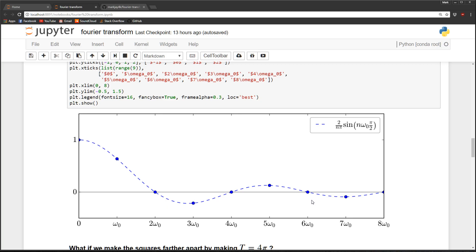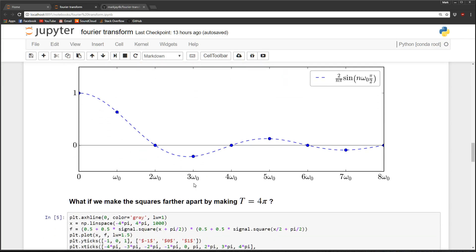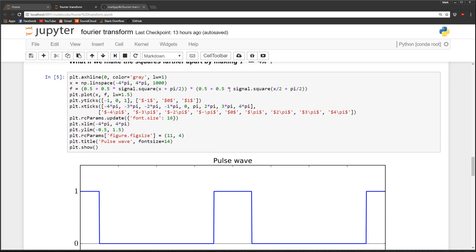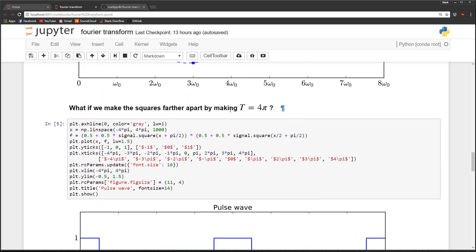So kind of cool. So now what happens if I were to take our square wave and just push those square pulses farther and farther apart? So what I mean by that is we keep this square pulse the same, but we just separate the distance between them by a little bit more. So in this case, I doubled the distance between them by doubling the period to four pi.